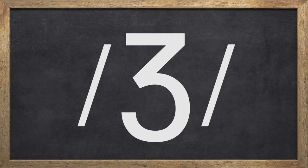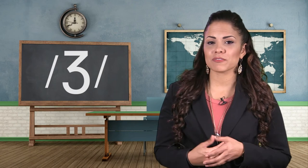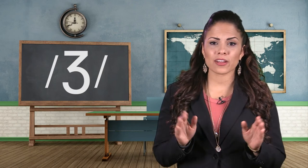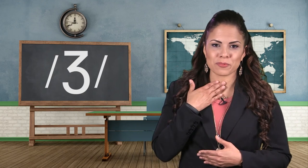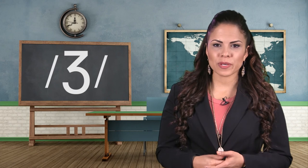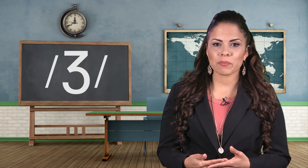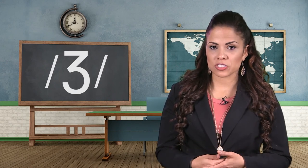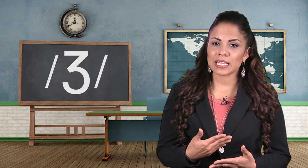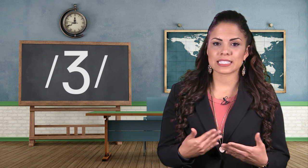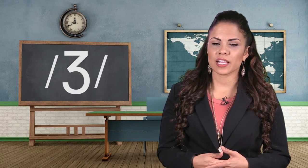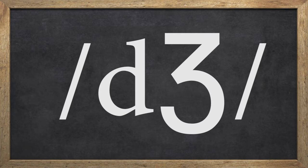The third palatal sound is /ʒ/. You will pucker your lips, bring the body of the tongue closer to the roof of your mouth but not touch it, and blow air just like /ʃ/ — but this time you will make your vocal folds vibrate. This consonant is special because it does not happen at the beginning of any word in English. It only happens in the middle or at the end. For example: pleasure, decision, beige, and garage.